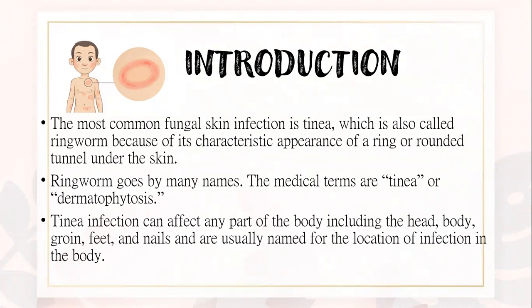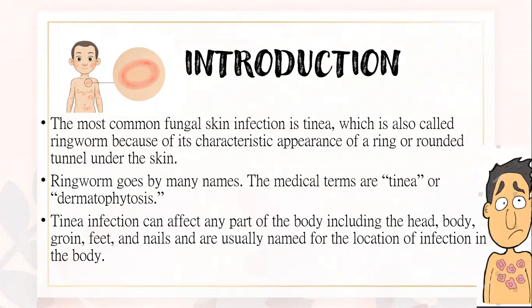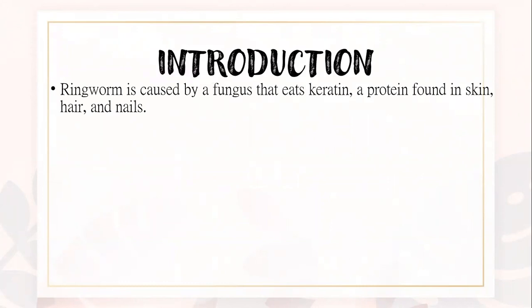Tinea infection can affect any part of the body, including the head, the body, the groin, the feet, and the nail, and are usually named for the location of infection in the body. Ringworm is caused by a fungus that eats keratin, a protein found in skin, hair, and nails.